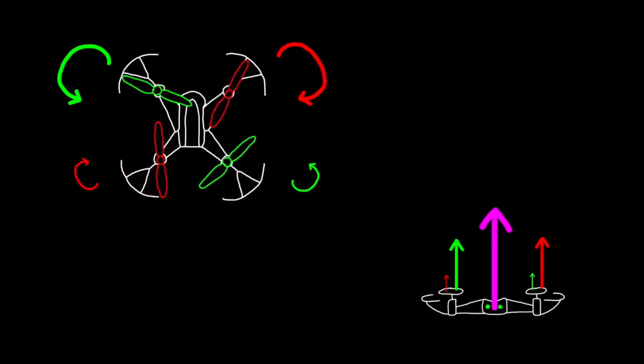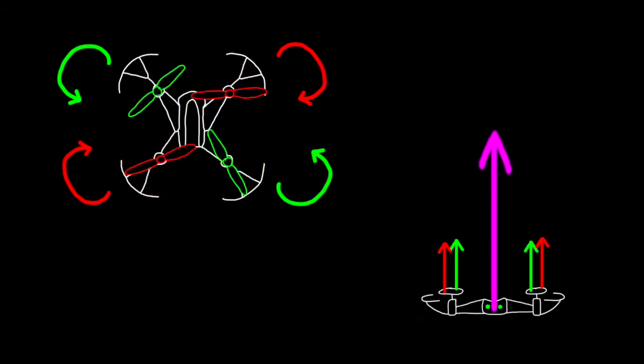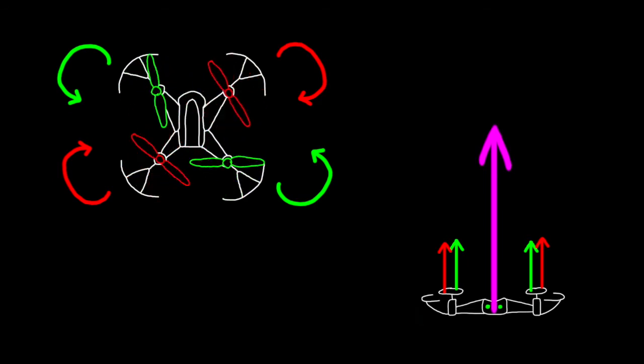Now, to change thrust, we need to increase or decrease all four motors simultaneously. In this way, roll, pitch, yaw, and thrust are the four directions that we have direct control over. And the commands to the motors would be a mix of the amount of thrust, roll, pitch, and yaw required.